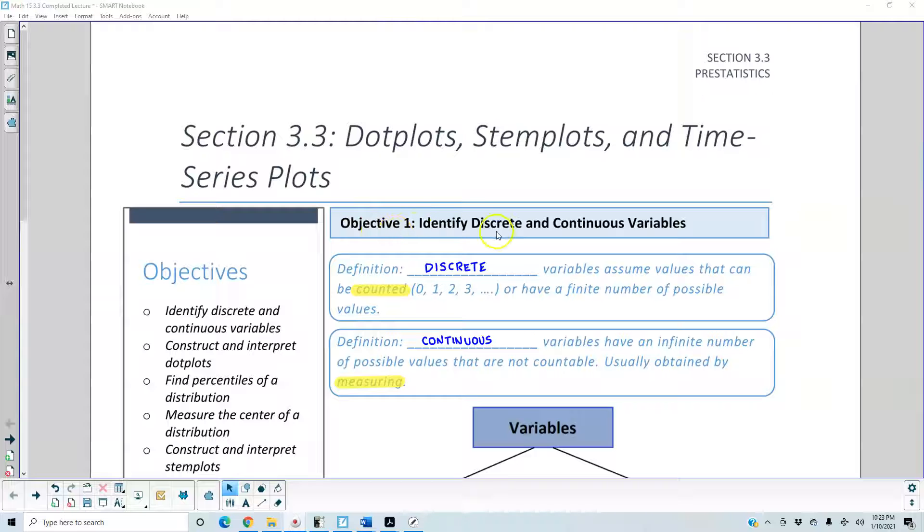Objective 1: Identify discrete and continuous variables. Definition: Discrete variables assume values that can be counted—0, 1, 2, 3, and so on—or have a finite number of possible values.